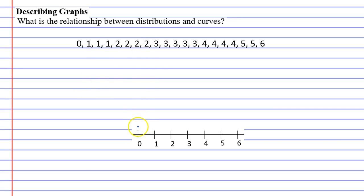So if I look at this data here, I can organize it onto a dot plot. I've got three 1s, four 2s, five 3s, four 4s, two 5s, and a 6.